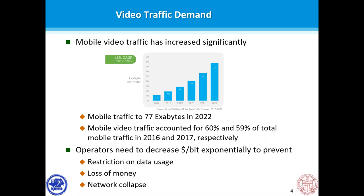Video traffic has increased dramatically in the past and is expected to continue increasing in the future. It is expected that mobile traffic will increase to 77 exabytes, with around 60% of the traffic coming from video demand. The service provider might need to decrease the cost per bit significantly; otherwise, it needs to either restrict data usage of users, lose money, or watch the network collapse. Obviously, the only feasible choice is to reduce the cost per bit.